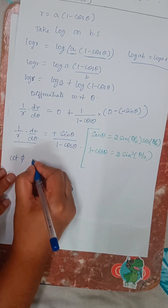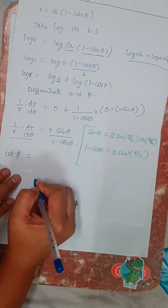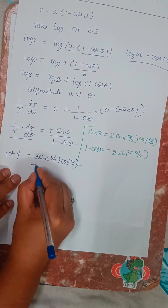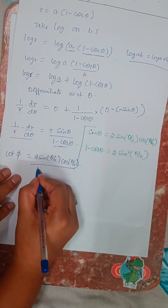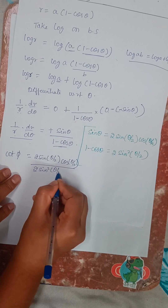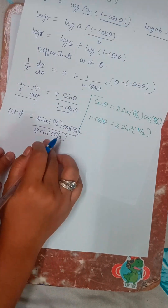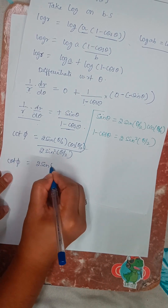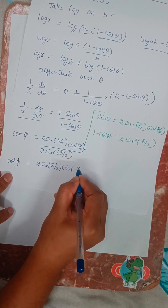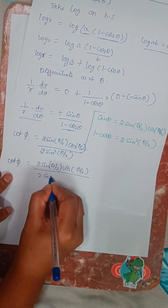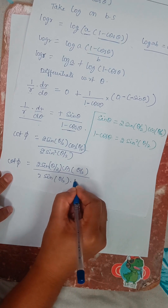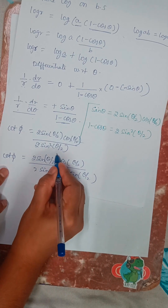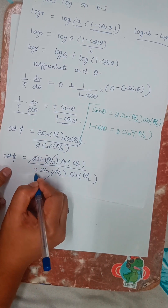So cot φ = [2·sin(θ/2)·cos(θ/2)] / [2·sin²(θ/2)]. The 2s cancel, and one factor of sin(θ/2) cancels from numerator and denominator, leaving cos(θ/2)/sin(θ/2).